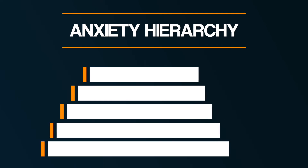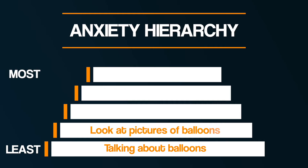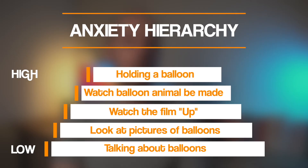A hierarchy in this context refers to a system of arranging things in a particular order of intensity. In terms of phobias, you would produce a list of scenarios about the feared object or situation that would produce anxiety, ordered from the least frightening at the lowest level up to the most frightening at the top. For example, with the fear of balloons, you might start by simply talking about balloons, then look at pictures of balloons, then watch the film Up — which has lots of balloons — then stand at a distance watching someone make a balloon animal, progressing to actually holding a balloon.